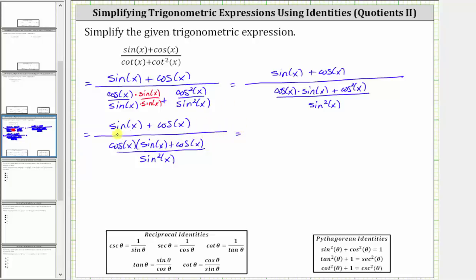Now because this fraction bar represents division, and dividing by a fraction is equivalent to multiplying by the reciprocal of the fraction, let's write this quotient as a product. We would have the numerator of sine x plus cosine x, which as a fraction has a denominator of one,